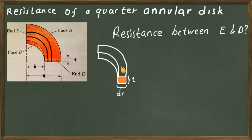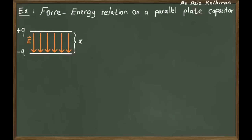The radius of these rings are changing from B to A. When you add them in parallel, the radii will change from B to A.